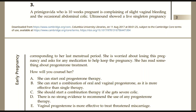This question is controversial. The mastering book gives answer D — no strong evidence to recommend any progesterone therapy — based on the NICE 2012 guidelines. However, the more recent RCOG recommendation suggests progesterone is of some benefit in threatened miscarriages. Therefore, the most probable current answer would be E — vaginal progesterone is more effective to treat threatened miscarriage.